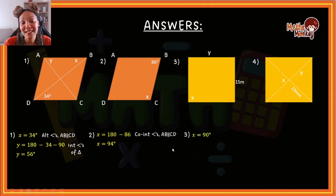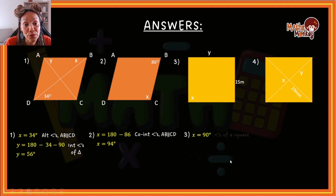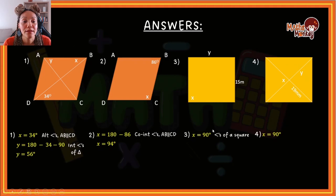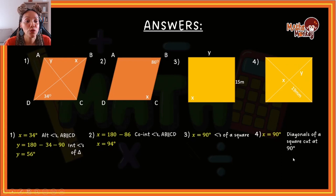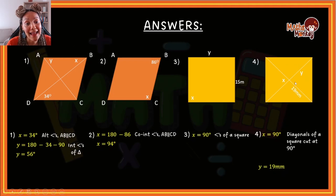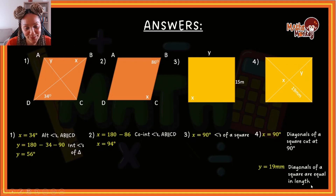Number three was nice and easy. x equals 90 because this is a square. Then y equals 15 because all the sides are equal. For number four: x is 90 because it's at the center and the diagonals bisect at 90. y equals 19 because all the diagonals in a square are equal to each other. And those are your answers for this exercise.